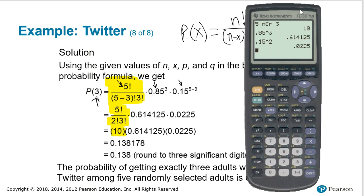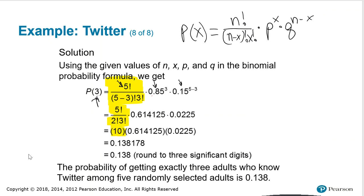I get this decimal approximation for the probability, I'm going to round to three significant digits, and then the probability of getting exactly three adults who know Twitter among five randomly selected adults is .138.